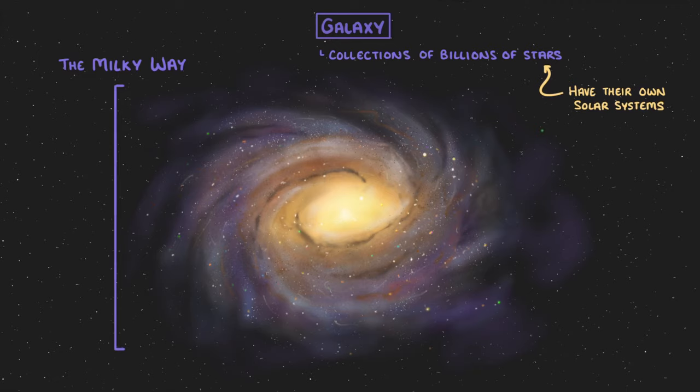For example, our solar system is just a super tiny speck about halfway along one of the Milky Way's spiral arms.